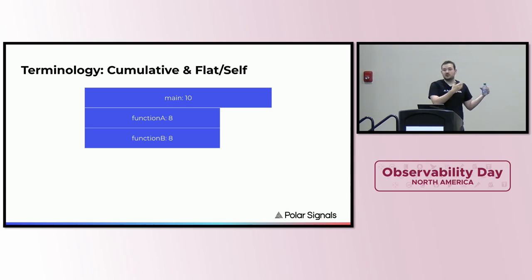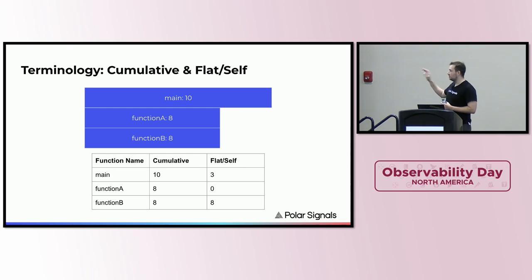And essentially function A didn't actually contribute anything. And so the terminology that we use here is cumulative and flat, or some other systems also call this self. And so main actually only has a self value of two here, whereas function B has a self value of eight, right? Function A actually has not contributed at all. And so therefore, function A has a self value of zero. However, it is calling function B. And so therefore, in cumulative, it and its children are using eight units in this case.